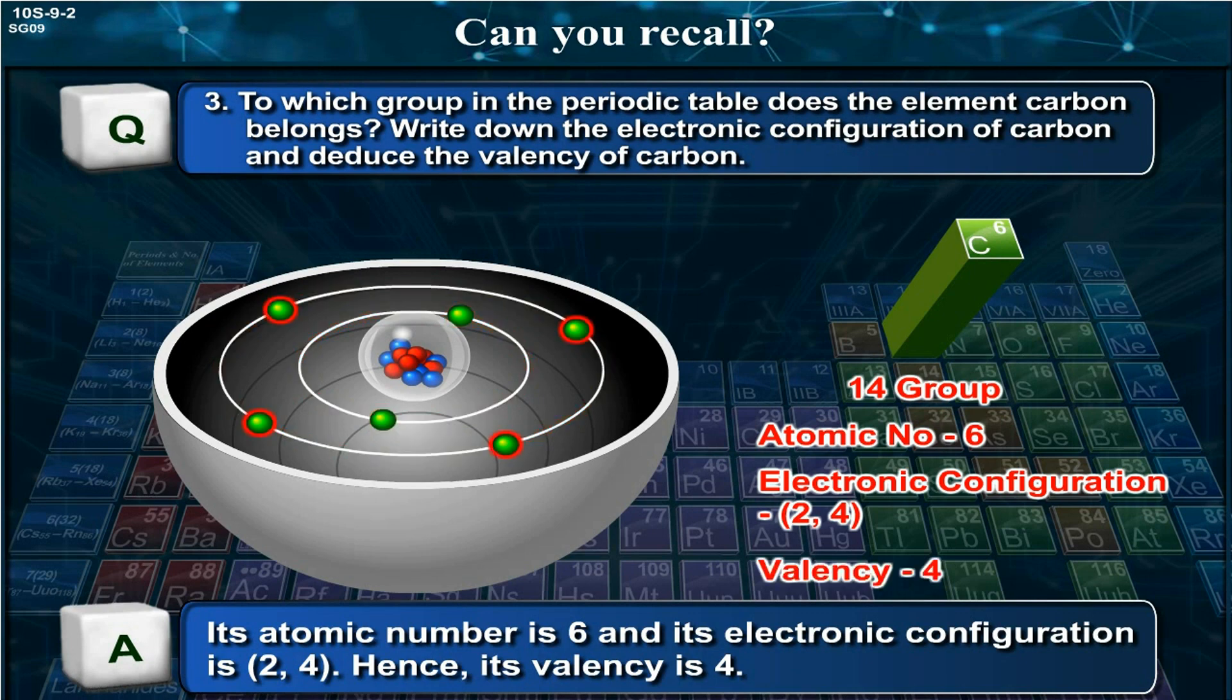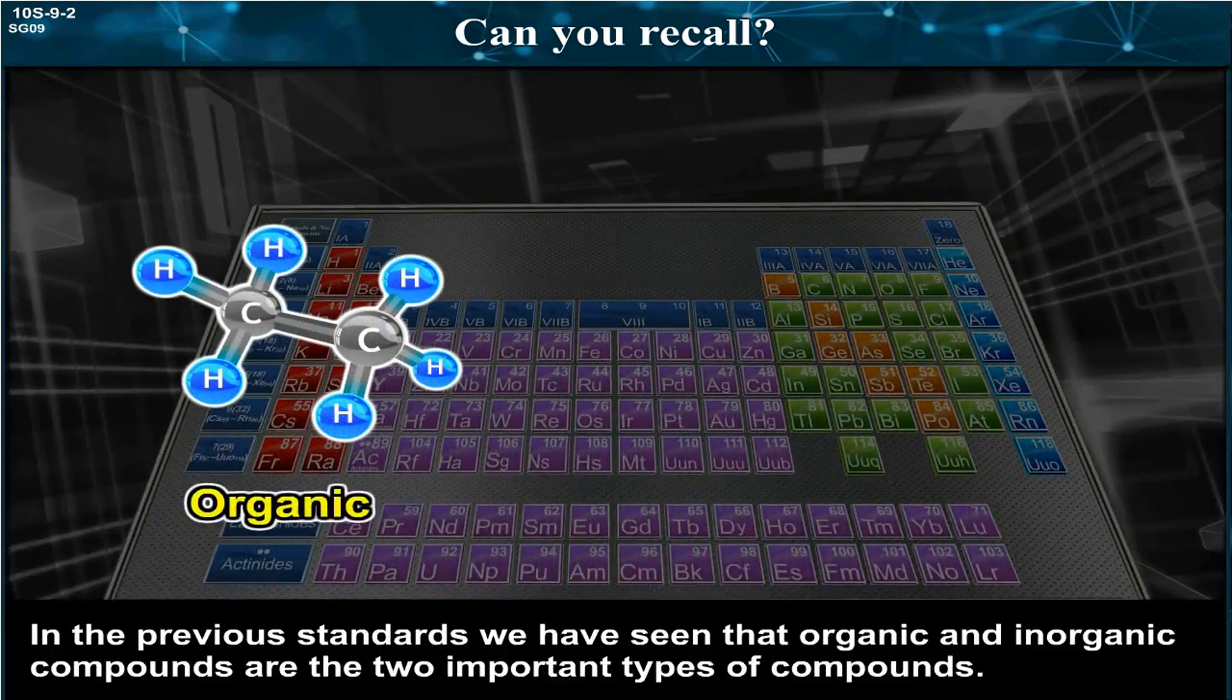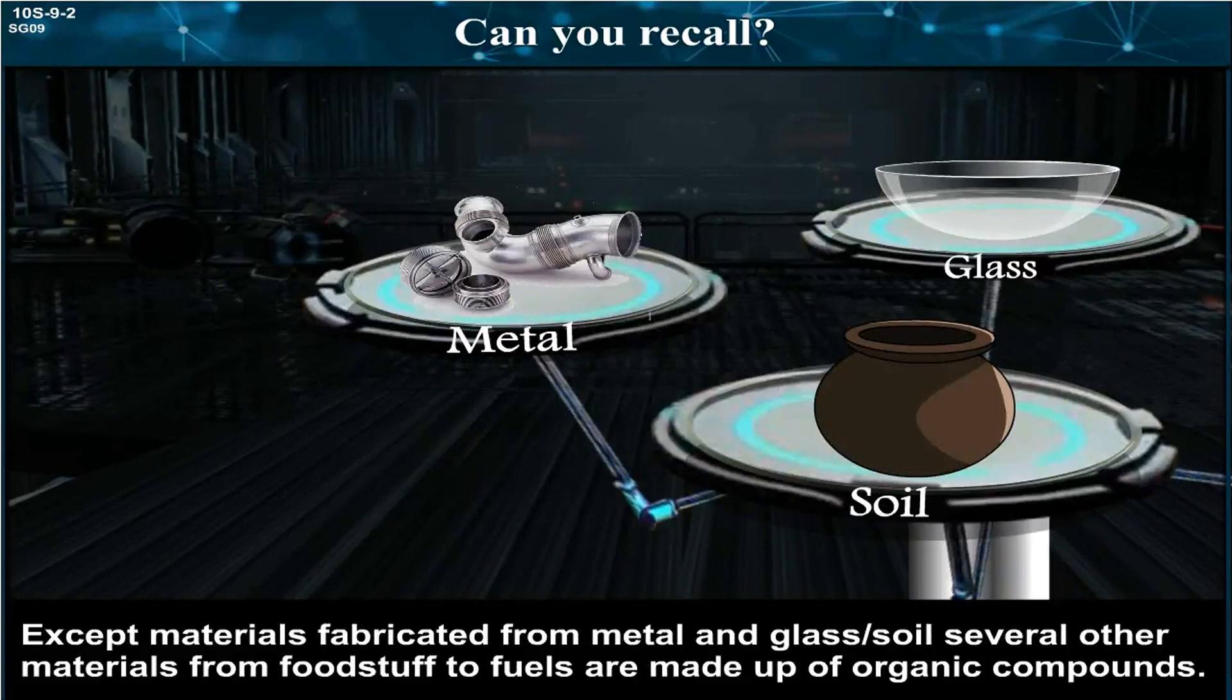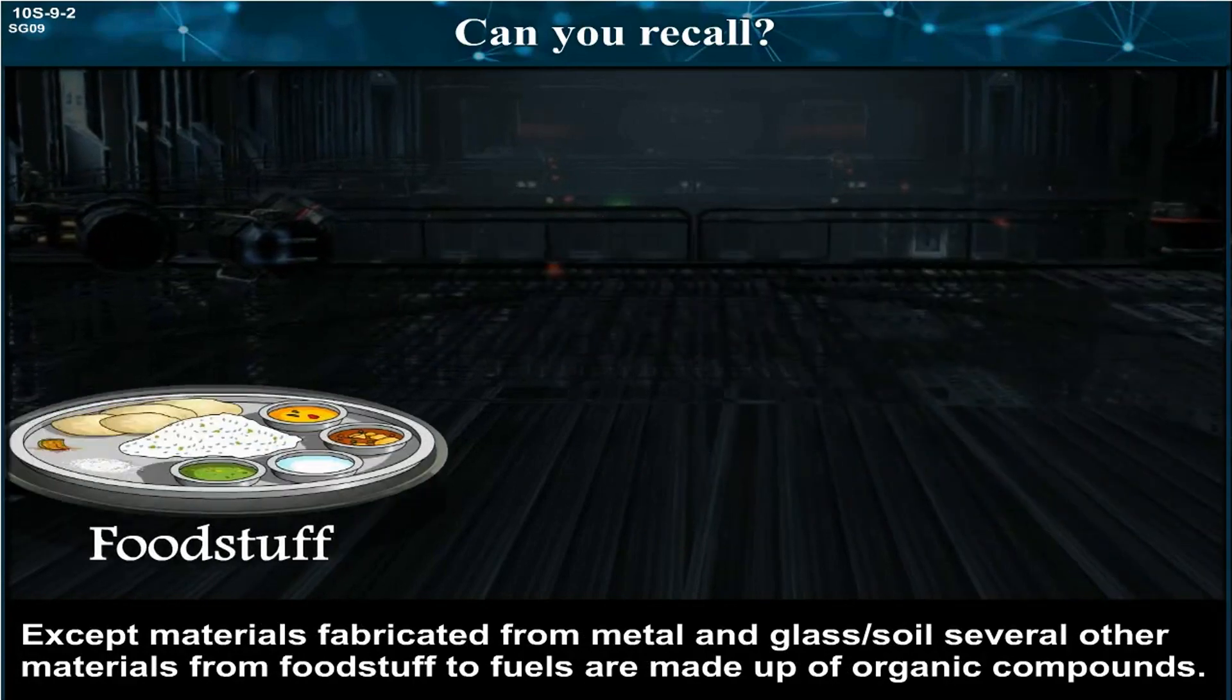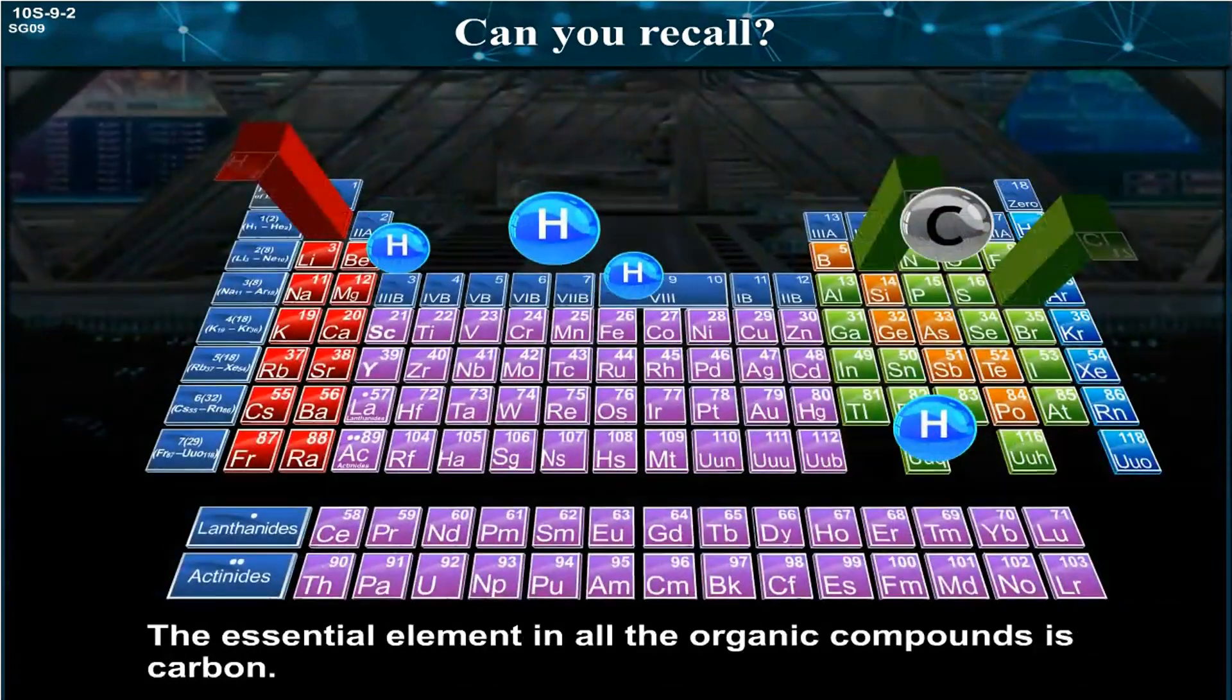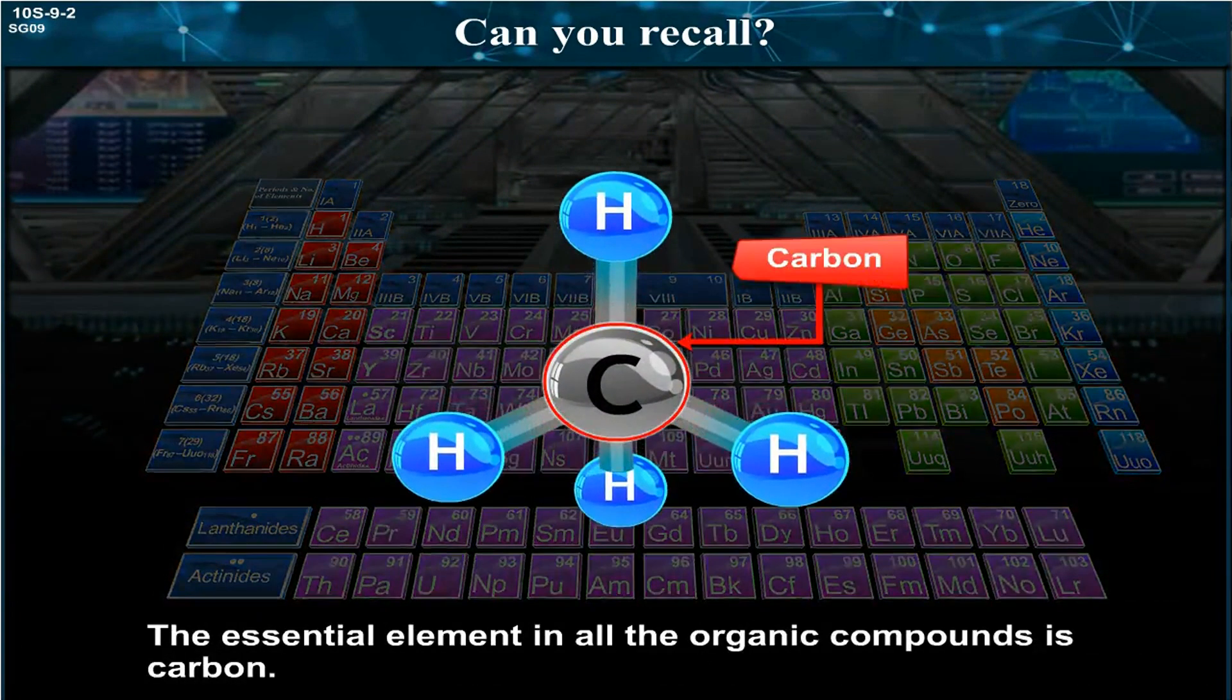In the previous standards, we have seen that organic and inorganic compounds are the two important types of compounds. Except materials fabricated from metal and glass or soil, several other materials from foodstuff to fuels are made up of organic compounds. The essential element in all the organic compounds is carbon.